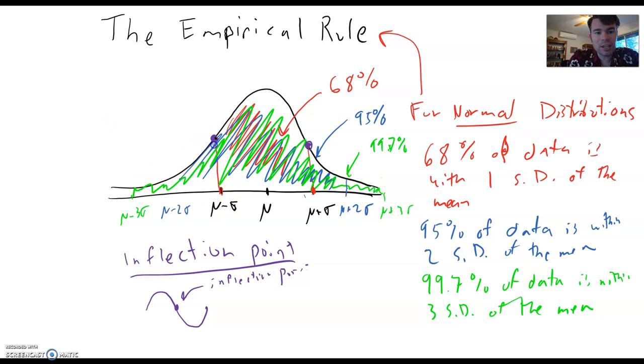And those inflection points, you'll see, they happen right where we're one standard deviation to the left of the mean, and right where we're one standard deviation to the right of the mean. So those inflection points happen to occur at one standard deviation left and right of the mean. So that's a nice thing that lines up with what we've learned from the empirical rule. That is to say, 68% of the data is located between the inflection points in the graph.